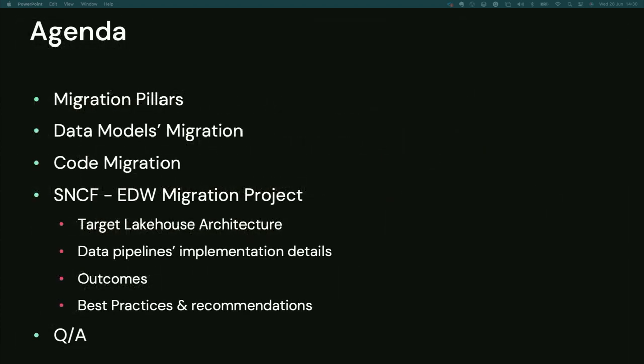For our talk today, we'll go through the following agenda. We'll start by speaking about the migration pillars — the steps you have to consider when migrating, whether it be a Data Warehouse or Hadoop. After that, we'll dive into how you can model your data schema when migrating to Databricks, with examples of Star Schema and Data Vault. Then we'll look at concrete code examples from Oracle and how they map to Databricks. The second part will be led by Imanshu, who will speak about the project he implemented at SNCF, a railway company in France, detailing the Lakehouse architecture and learnings from that project.